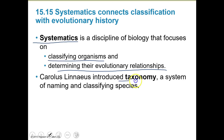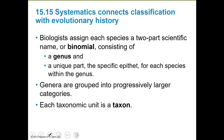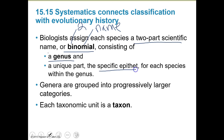The first person who introduced what we call taxonomy - our system for naming and classifying species - was Carolus Linnaeus. Biologists assign each species a two-part scientific name, and we call that binomial. Bi means two, and nomial means name, so binomial literally means two names. It consists of the genus, which is the first part, and the specific epithet for each species within the genus. When you put the genus and specific epithet together, you get the species name.